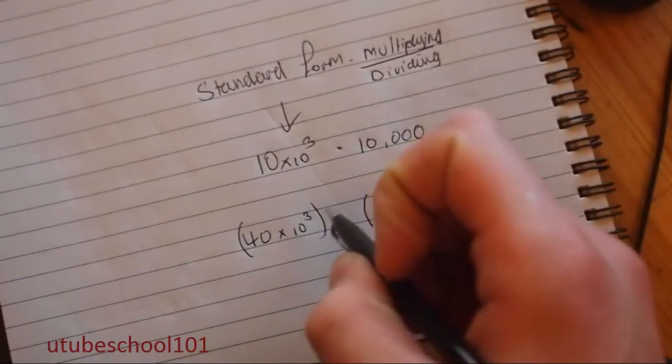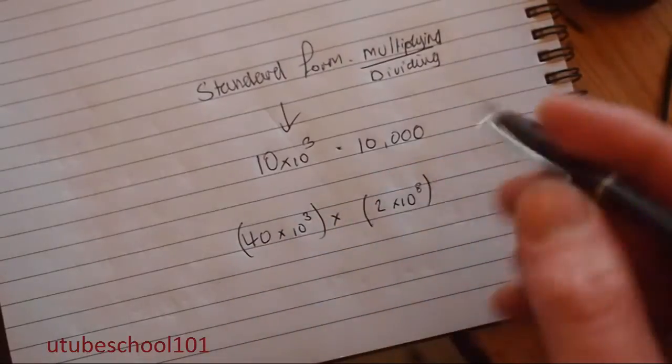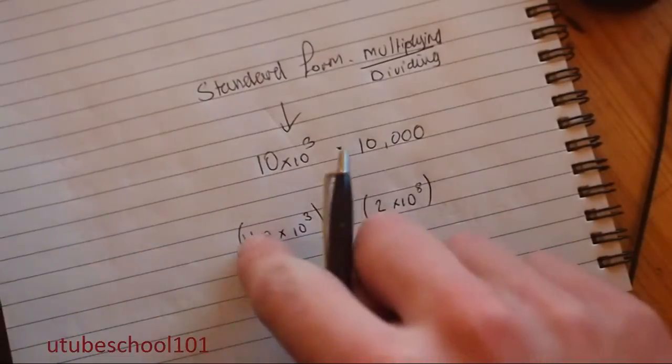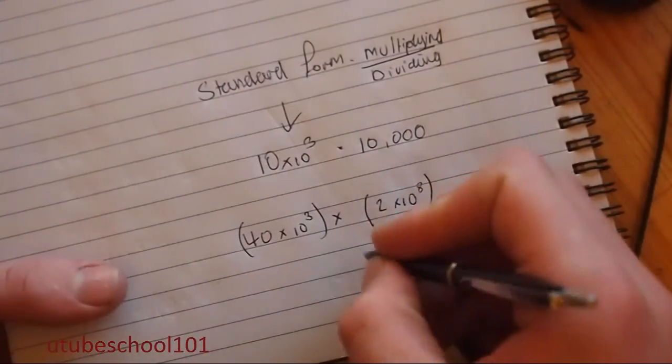So essentially, what you do is you first of all just multiply these two numbers here. So you multiply the 40 and the 2 to get 80.